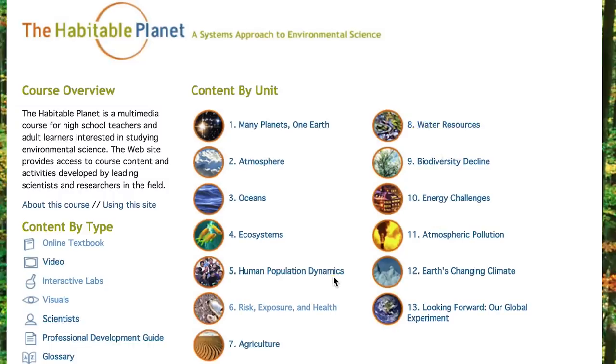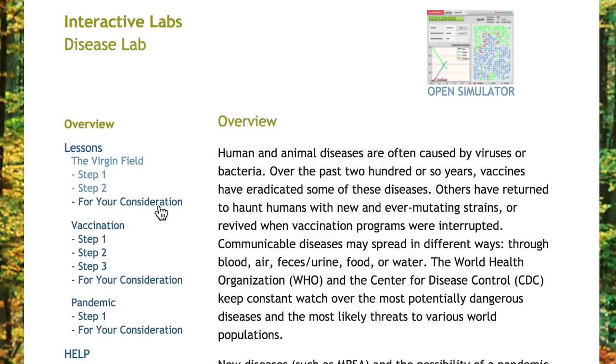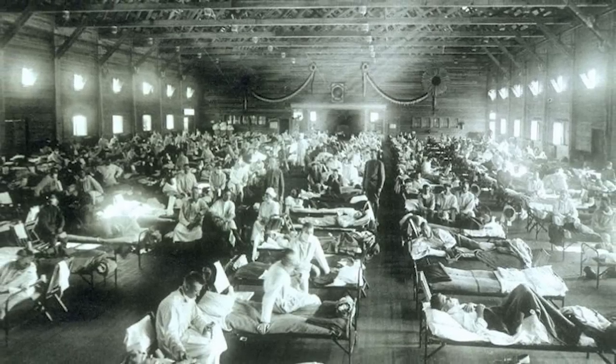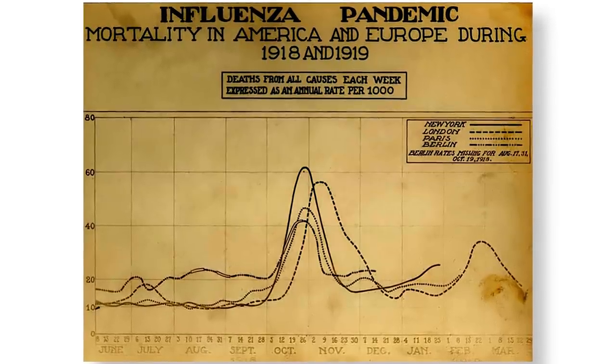On the Habitable Planet you can learn through lessons and their corresponding simulations. I did the disease lab, which helps you visualize and understand how pandemics like the Spanish influenza of 1918 occur and affect populations. It infected around 500 million people worldwide and killed an estimated 50 to 100 million — anywhere from 3 to 5% of the global population, which was around 1.8 to 1.9 billion. If we go further back to the Black Death, that killed an estimated 450 million people during the 14th century.